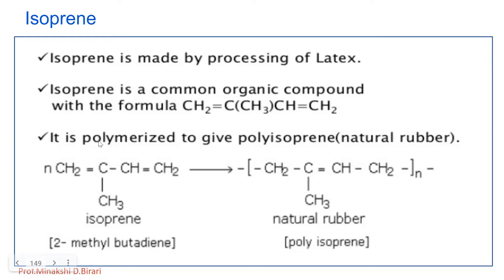Isoprene undergoes polymerization to give a polymer known as polyisoprene, which is natural rubber. This is the structure of 2-methyl-1,3-butadiene joined to each other in cis geometry through the process of polymerization to give natural rubber, which is polyisoprene.